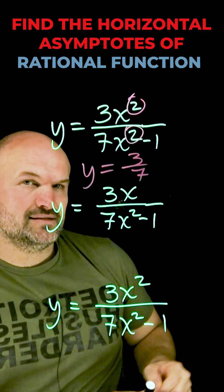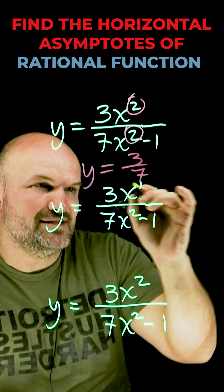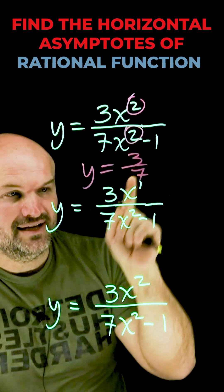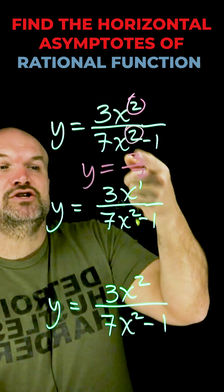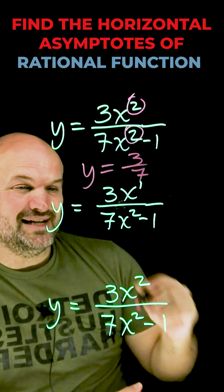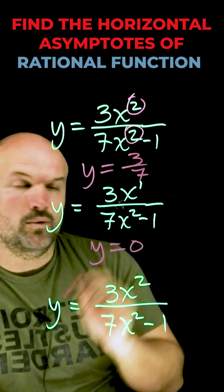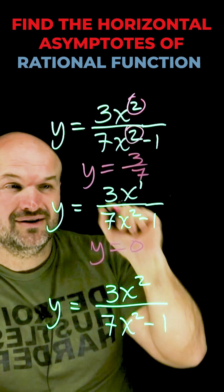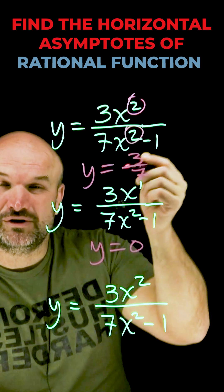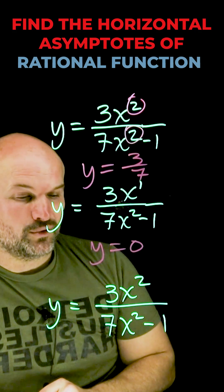Now in this case, you have 3x. Well, it's not raised to a number, but it's actually raised to the power of 1. So now you can see the degree in my denominator is larger than the degree in the numerator. This one's pretty easy to remember. It's always going to be y equals 0. Doesn't matter what the numbers are. The degree in the denominator is bigger than the degree in the numerator, y equals 0 is your horizontal asymptote.